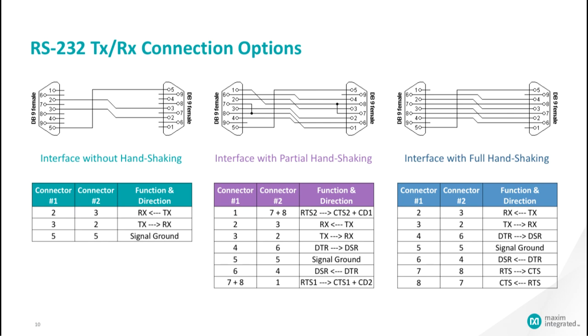There are several transmit-receive connection options of RS-232. They are interface without handshaking, partial handshaking, and full handshaking. Handshaking is when a pause is inserted to allow time to process or when the CTS or clear to send cannot handle new requests. Handshaking is a flow control that is implemented through both software and hardware implementation.